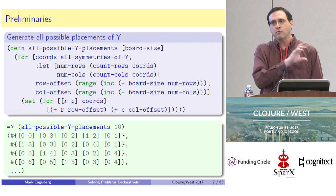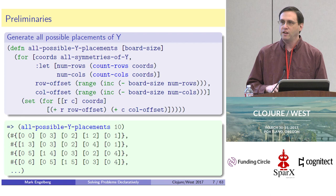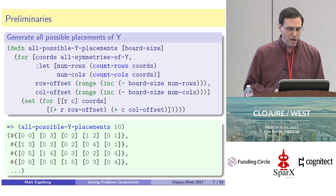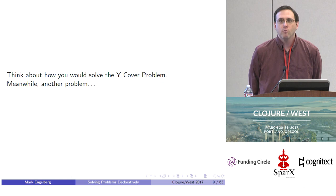We can write a function that scans across the grid left to right, top to bottom, and finds all the possible ways that all these Y shapes can fit into the 10 by 10 grid. As demonstrated at the bottom, when you call this with a board size of 10 for a 10 by 10 grid, it starts spitting out a lazy sequence of all the possible placements of Y.